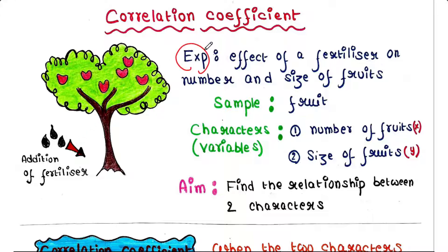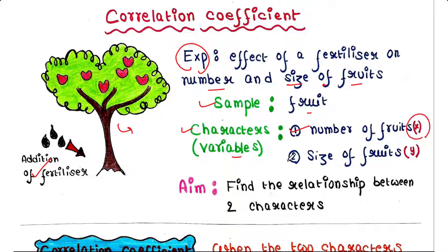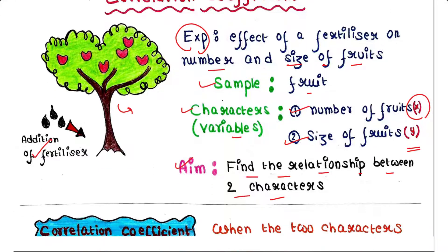In the last lecture we performed an experiment where we made a fertilizer and applied it to an apple tree to find its effect on the number as well as the size of fruits. The sample is fruit, and the two variables are number of fruits (x) and size of fruits (y). The aim of our experiment was to find the relationship between these two variables — that means whether any kind of correlation exists between them.